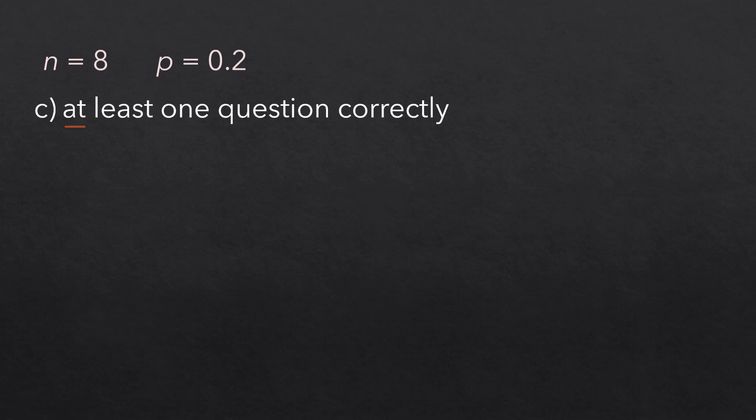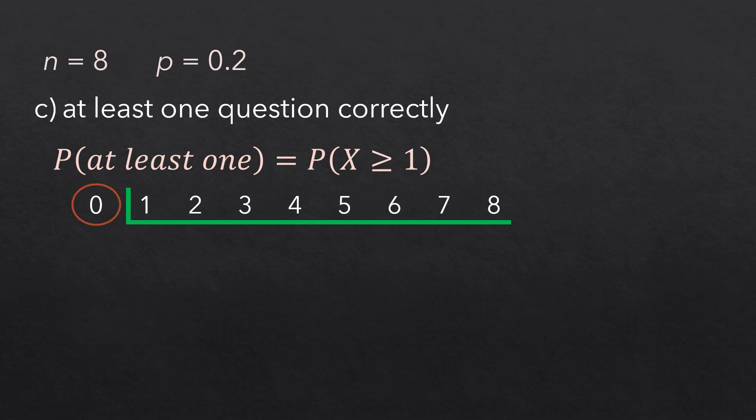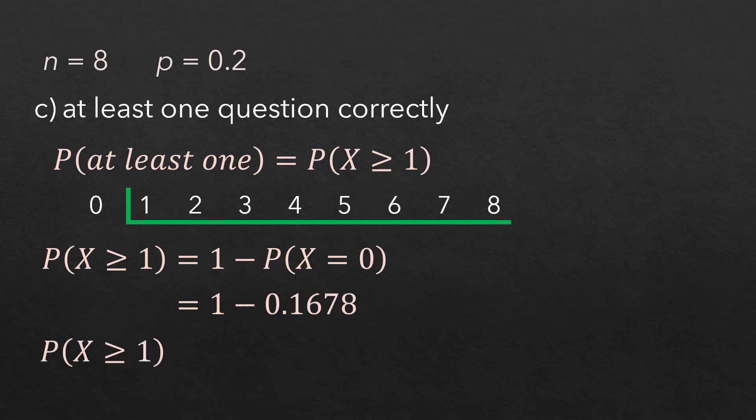Now, for at least one question correctly, we need x greater than or equal to 1. So, we can just find the probability for x equals 0, subtract it from 1, and that will give us the probability for x greater than or equal to 1. In essence, the probability of at least 1 is 1 minus the probability that x equals 0, which we obtained earlier. So, p of at least 1 is 0.8322.